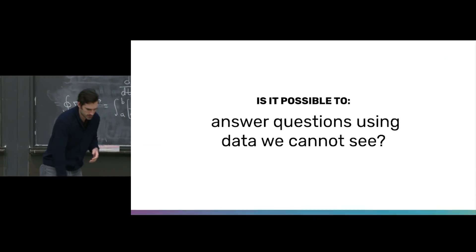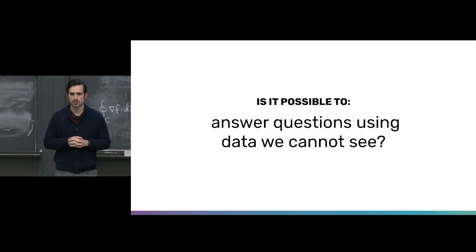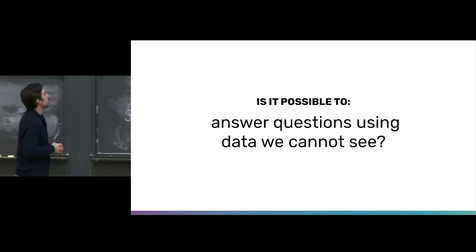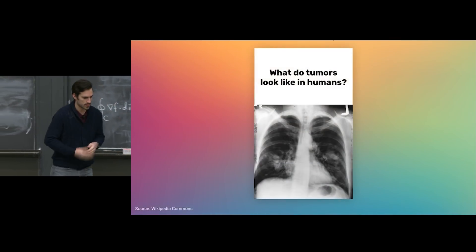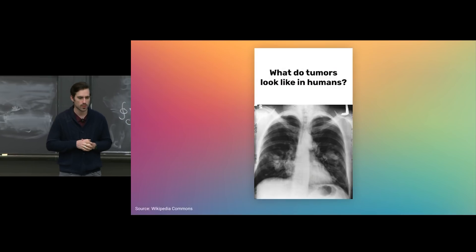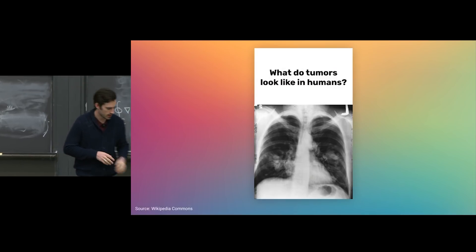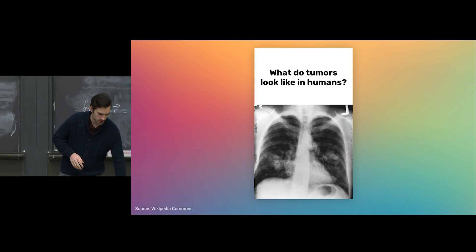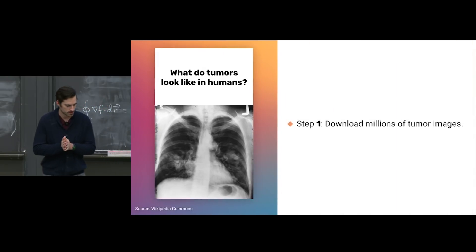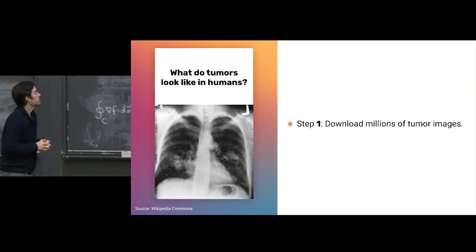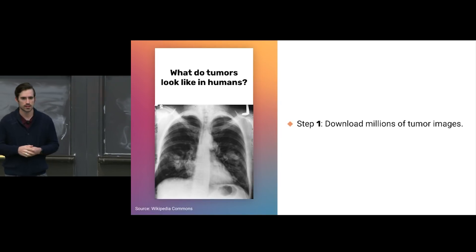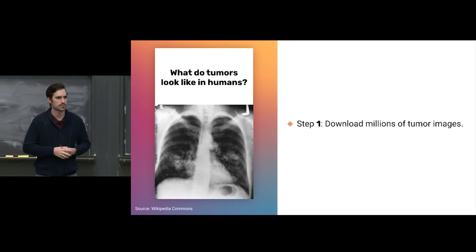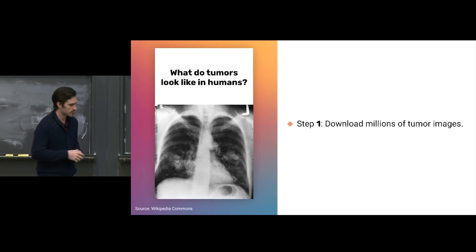So first, let's ask the question: is it possible to answer questions using data that we cannot see? This is going to be the key question we look at today. Let's start with an example. If we wanted to answer the question, what do tumors look like in humans? Well, this is a pretty complex question — tumors are complicated things. So we might train an AI classifier. And if we wanted to do that, we would first need to download a dataset of tumor-related images so we could statistically study them and recognize what tumors look like in humans.